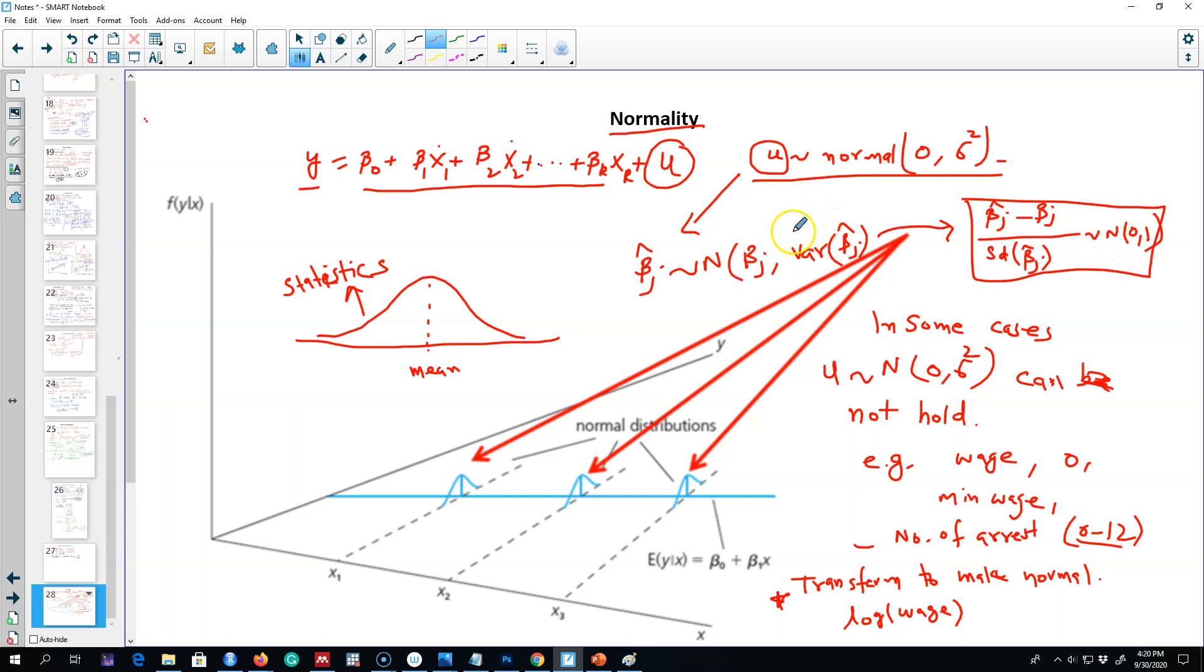All we are doing is converting these beta coefficients that we estimated using the OLS estimator into standardized estimates. We are assuming that those estimates follow a standard normal distribution. In the next video, I'm going to introduce you to test statistics. See you in the next video.